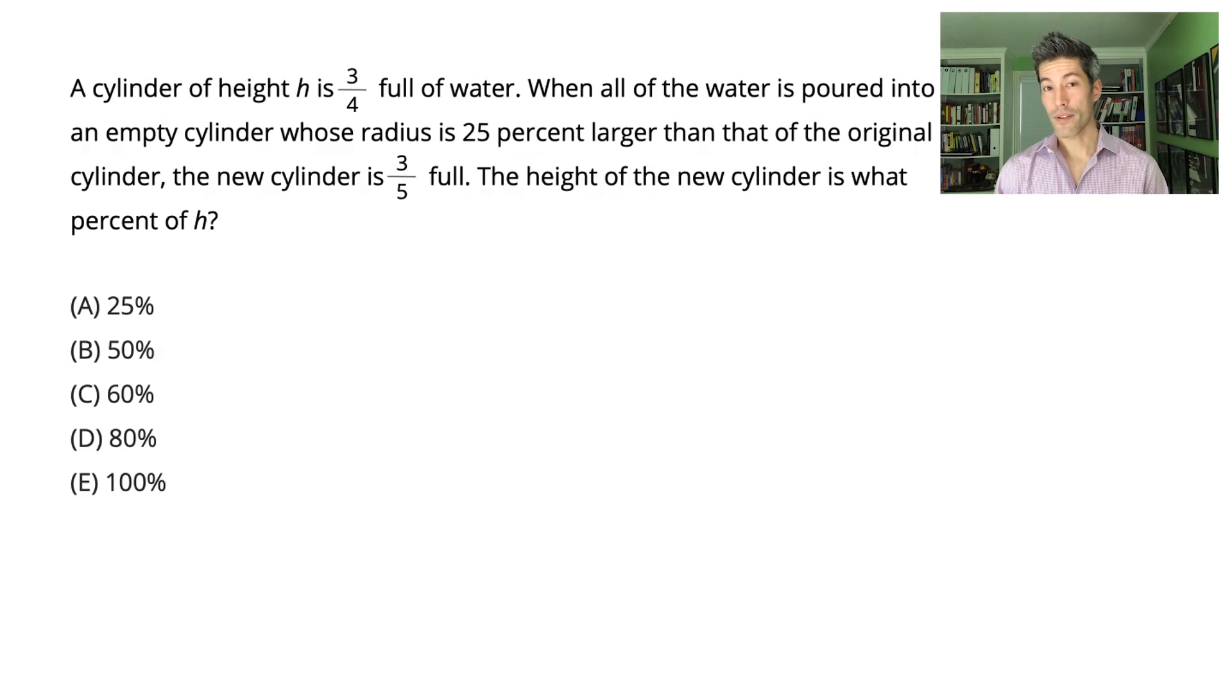So this problem is pretty intense. We're combining geometry principles with percent change. One geometry fact we need to know in order to succeed on this problem is the volume of a cylinder. So let's go ahead and write that down. The volume of a cylinder is πr²h. πr² is the area of a circle, and a cylinder is just a stack of circles that has a certain height.